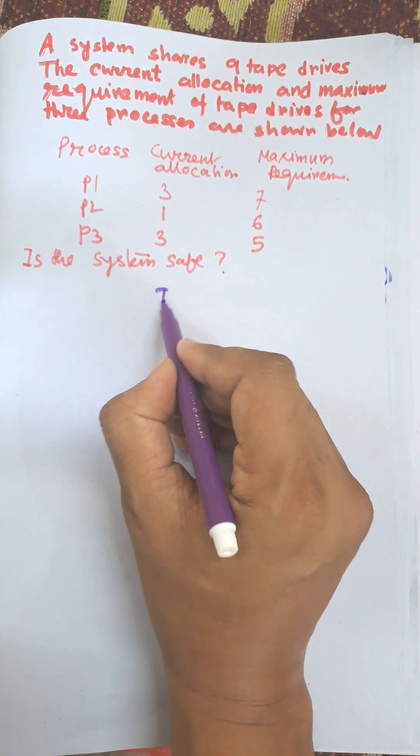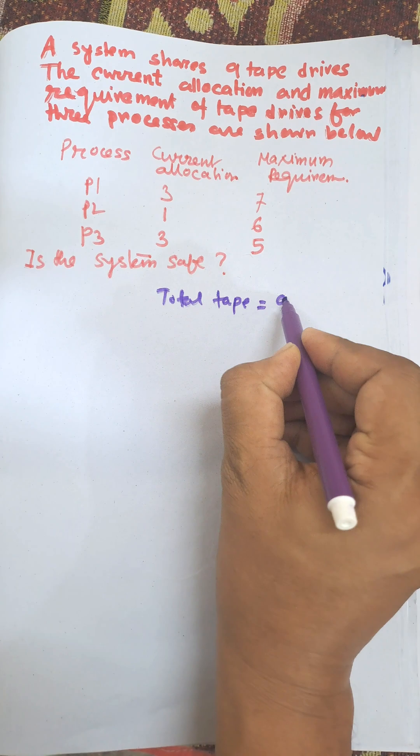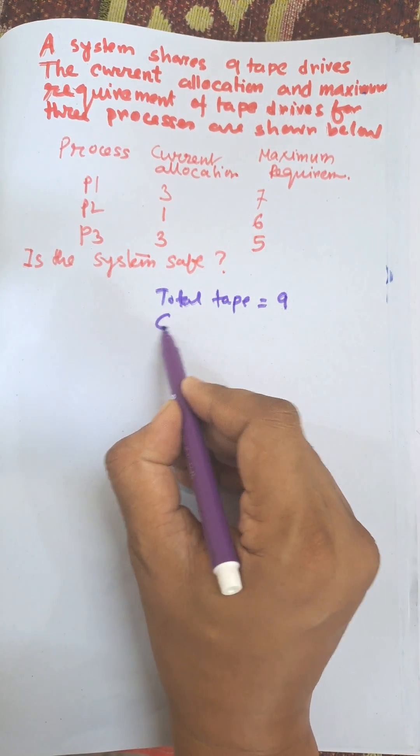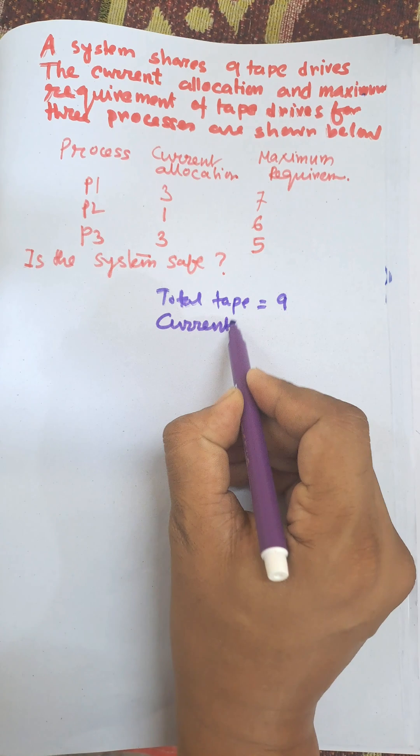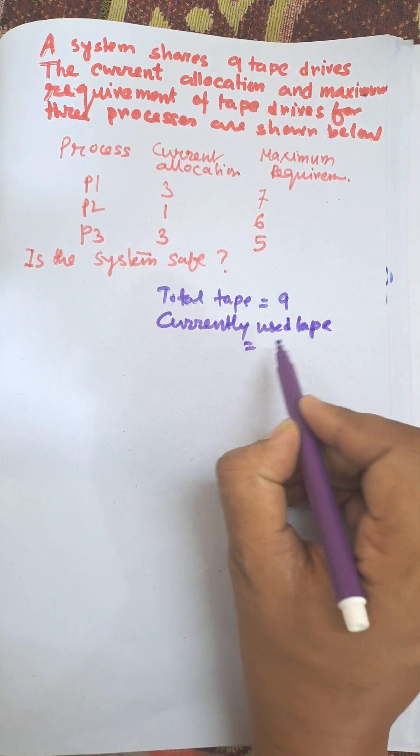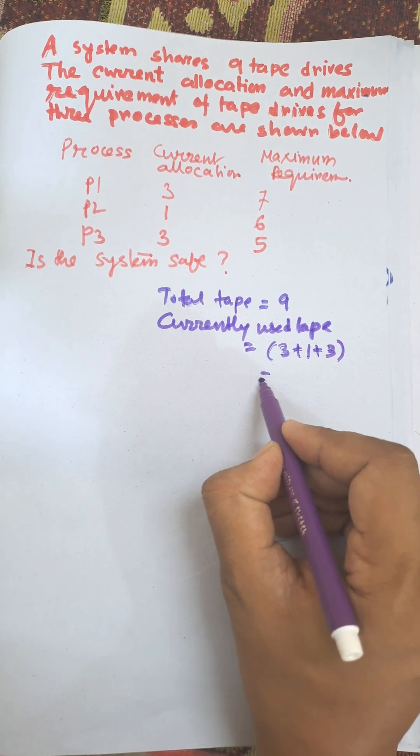Total tape equal to nine. The currently used tape equal to three plus one plus three, that is equal to seven.